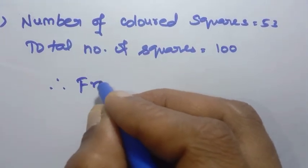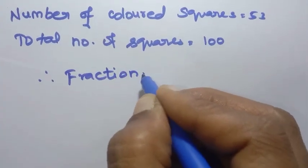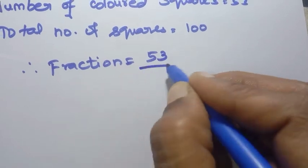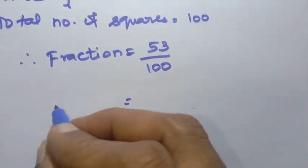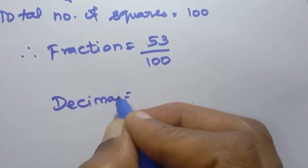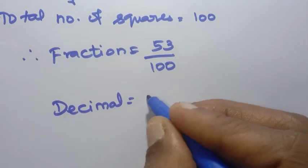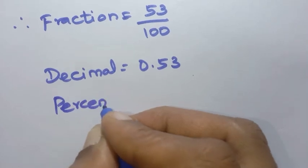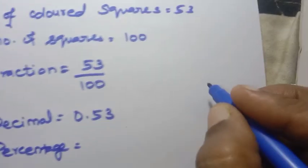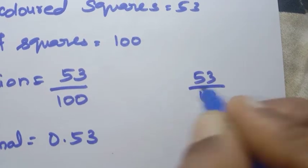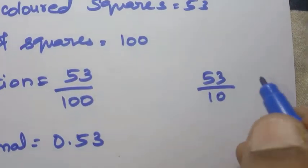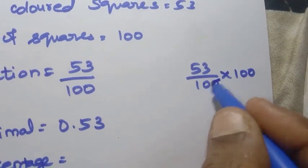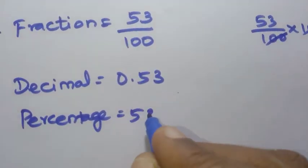For sum 2: fraction = colored/total = 53/100. Decimal = 0.53 (dividing by 100, two decimal places). Percentage: 53/100 × 100, the 100s cancel, so percentage = 53%.